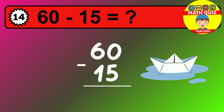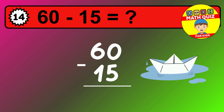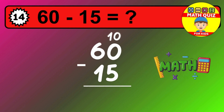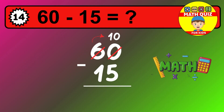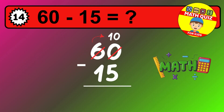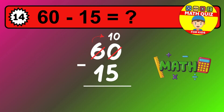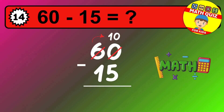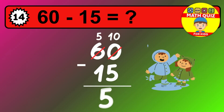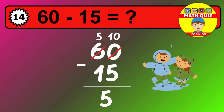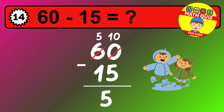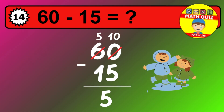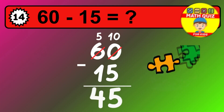Let's solve this step by step. We start with the units. 0 minus 5 is not possible, so we need to regroup. We take one 10 from the tens column. Now we have five tens and the units become 10. Now we subtract. 10 minus 5 is 5. Then we go to the tens. 5 minus 1 is 4. The final answer is 45.